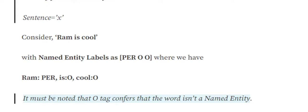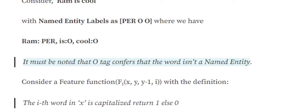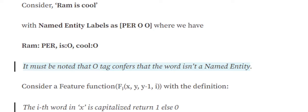O refers to words that are not a named entity. I suggest you go to my last video about IOB tagging to understand what O stands for. In this sentence, we have one entity 'Ram', and two non-entity words, so the correct sequence we wish to predict is PER, O, O.